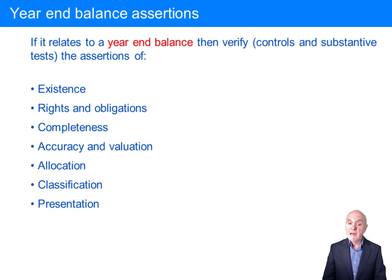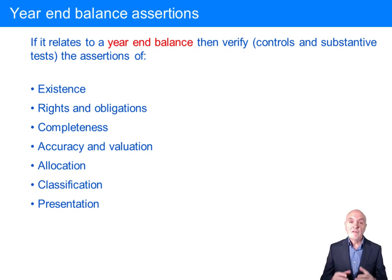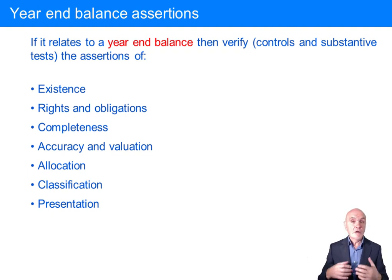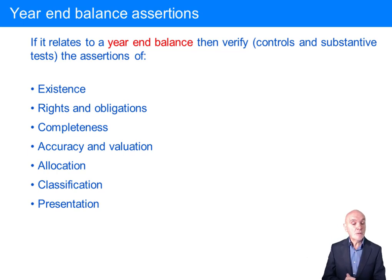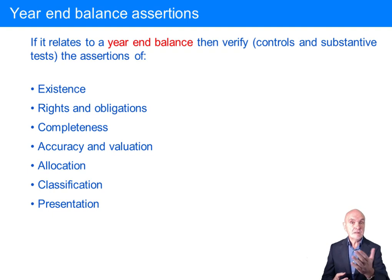Here are the assertions for year-end balances — the statement of financial position. Do the assets and liabilities exist? Are they belonging to us? Have we got all the liabilities complete, and also the assets — are they complete? Accuracy and valuation — right depreciation applied to non-current assets, writing down inventory as required, making allowances for bad debts, and allocating expenses into work in progress and finished goods.